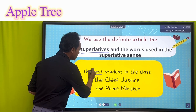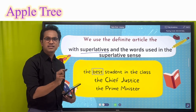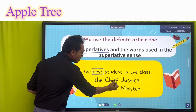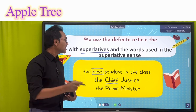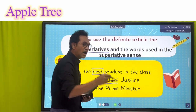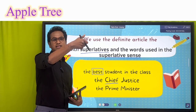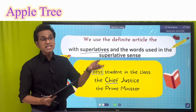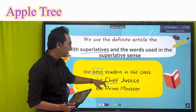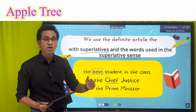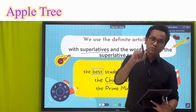'The best' is the superlative degree of good-better-best. Now, 'Chief Justice' — 'chief' is not actually a superlative word, but it carries a superlative sense: amongst all justices, the Chief Justice holds the supreme power. Similarly, 'prime' in Prime Minister is not a superlative word, but the sense of 'prime' itself is superlative.